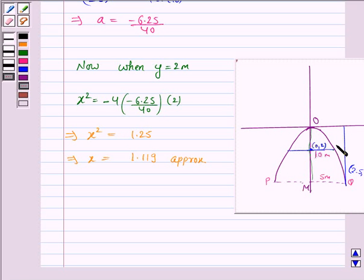If this point is Q', then the coordinates of Q' are (1.119, 2). Now, we have to find the width when the parabola is 2 meter from the vertex, that is, we have to find P'Q'.